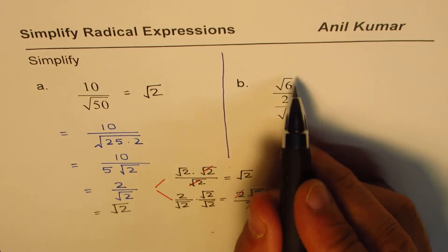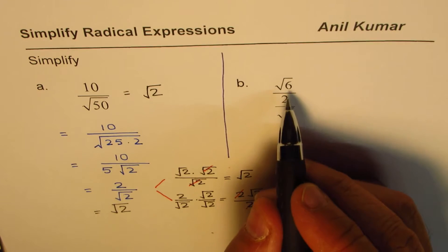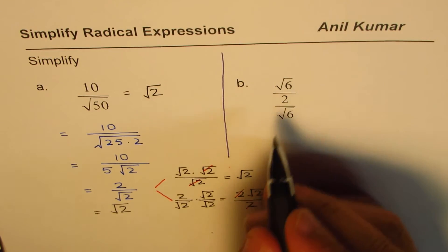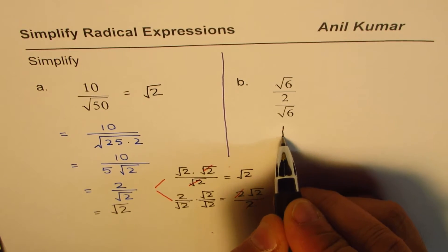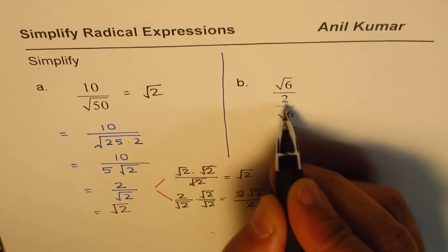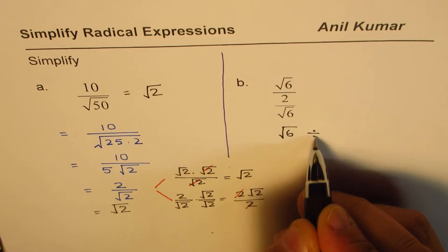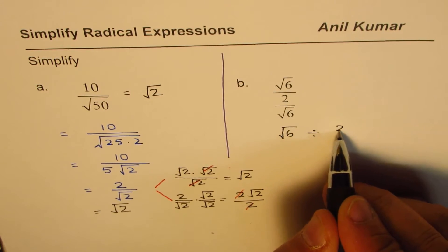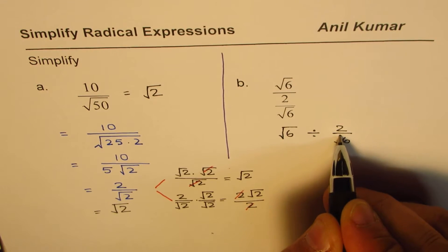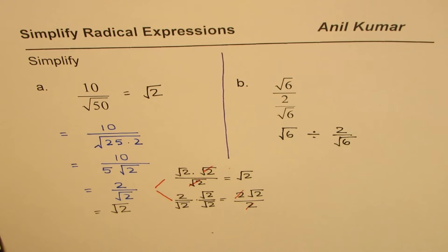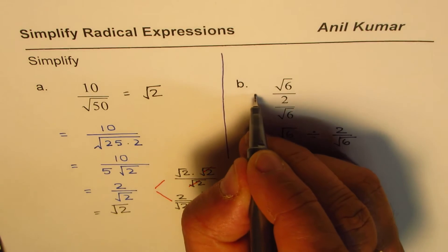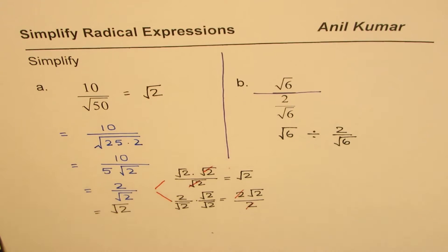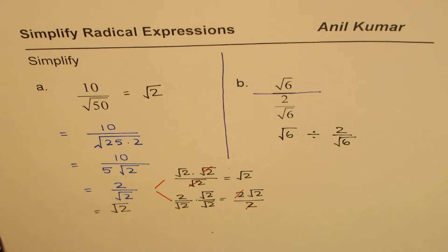So basically you could think about reading this as square root of 6 divided by 2 over square root 6. Is it okay? Square root of 6 divided by 2 over square root 6. This is like fraction over fraction. Think like this. Okay, now I hope it is clear.